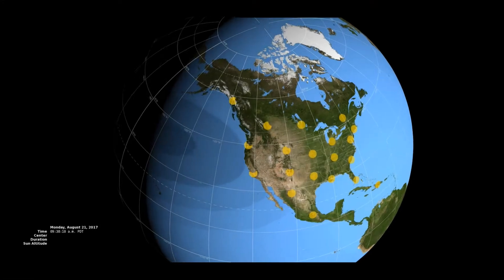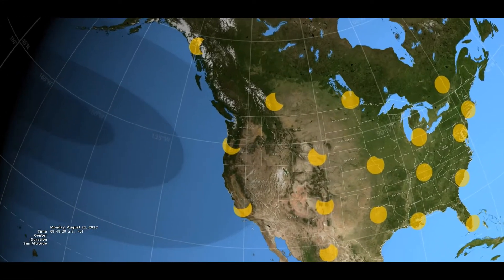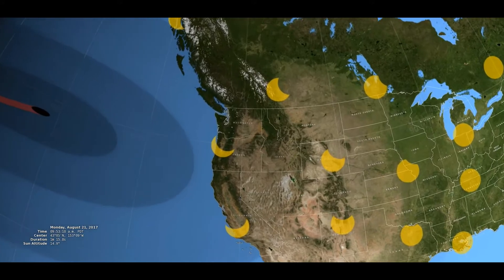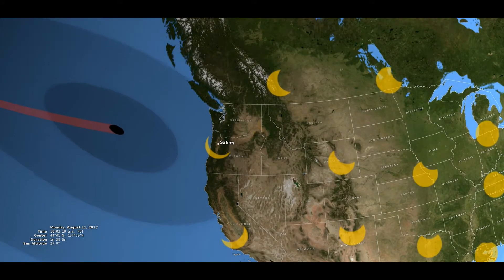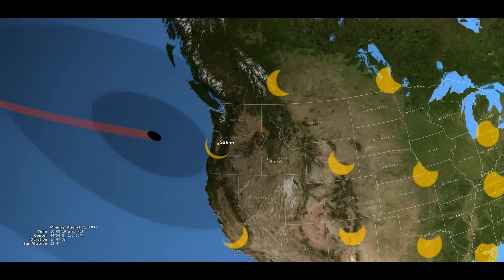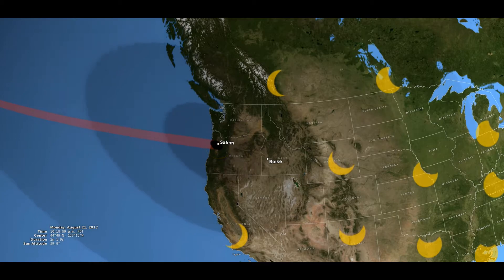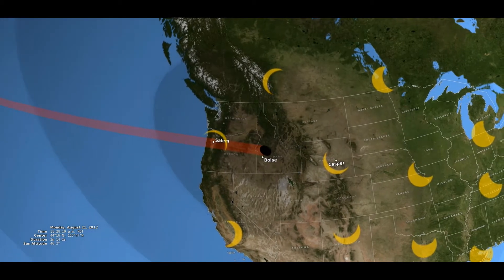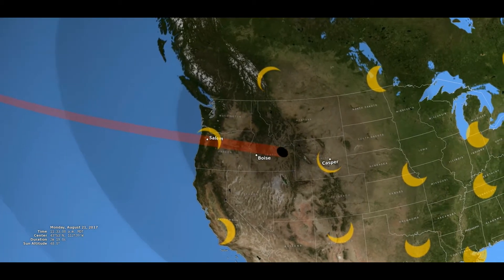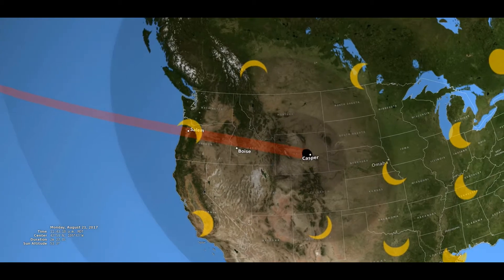This is an animation from the NASA website showing a view of the United States during the total solar eclipse in August. It shows the path of the total eclipse in red, and also the sun as it appears in various locations.